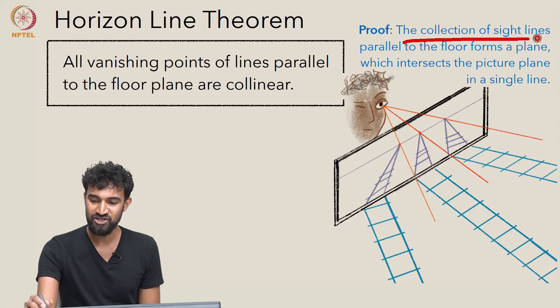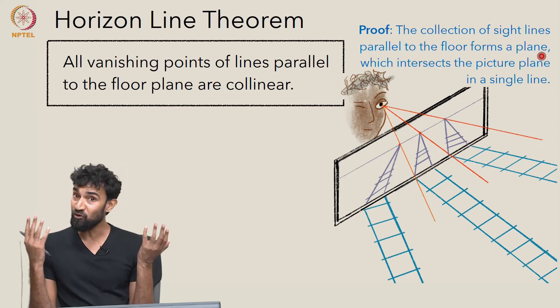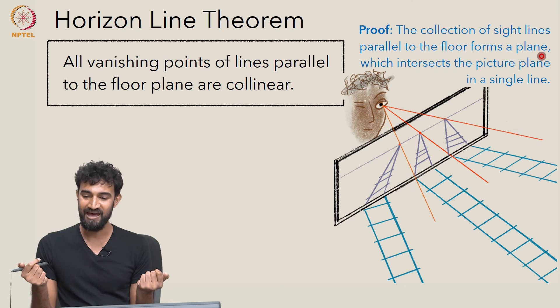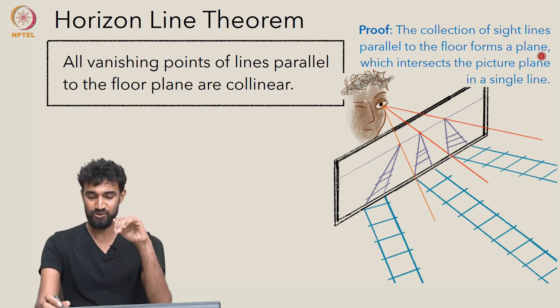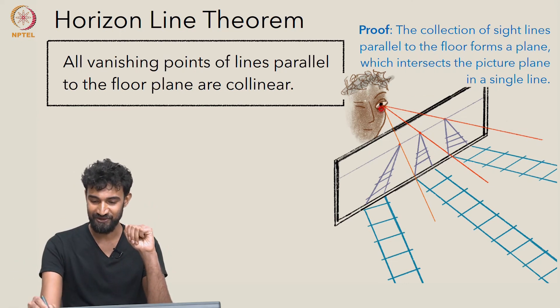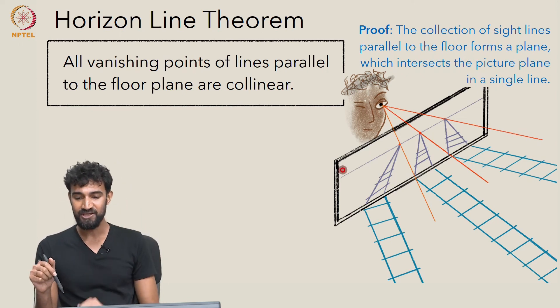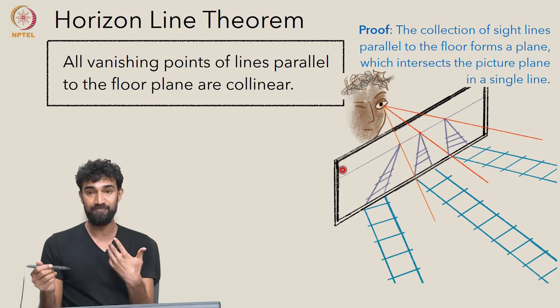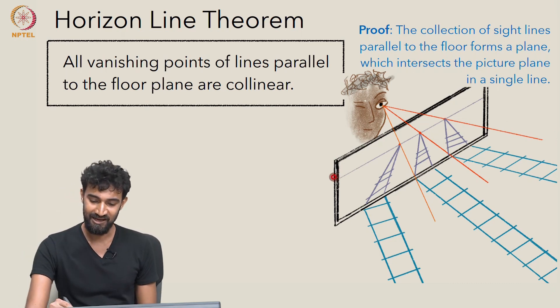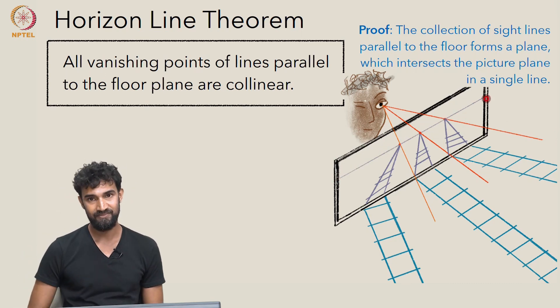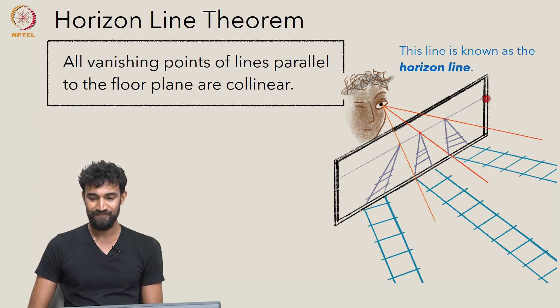Well, the collection of sight lines which are parallel to the floor plane forms a plane. And so we're really looking at a whole plane coming out of your eye, a plane's worth of lines. That plane is parallel to the ground, so that plane is going to intersect the picture plane in a single line. And that line is known as the horizon line.